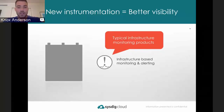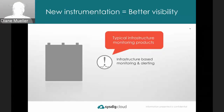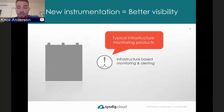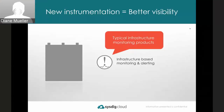A question comes in about how Sysdig integrates with cgroups. Knox explains that they actually look at cgroups and namespaces to see what's running on the host—they leverage those utilities to detect which system calls are coming from which place. Sysdig is pre-packaged in Debian and working closely with the RHEL team as well as CoreOS. Cgroups and namespaces are a fundamental part of the Sysdig kernel module.